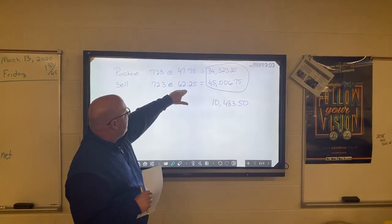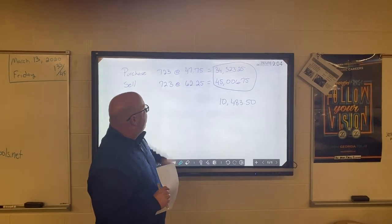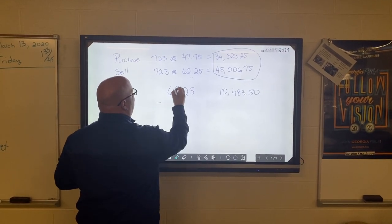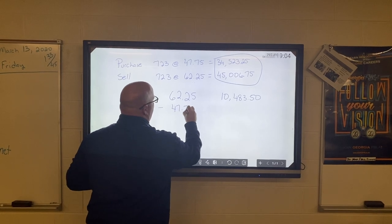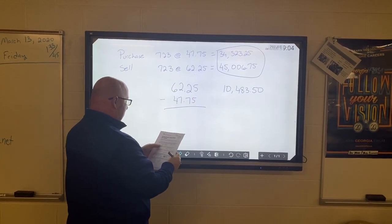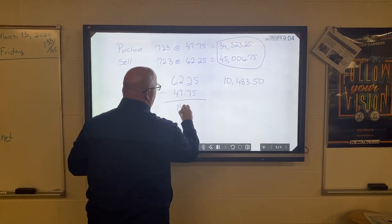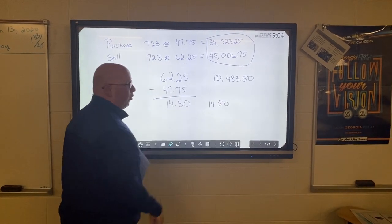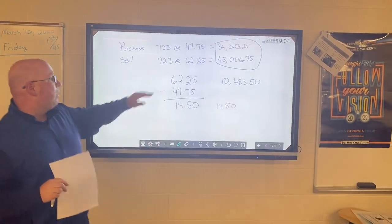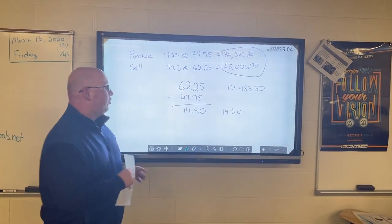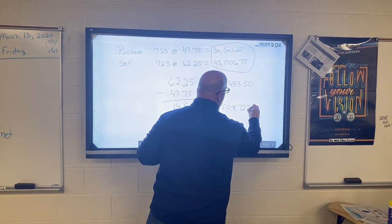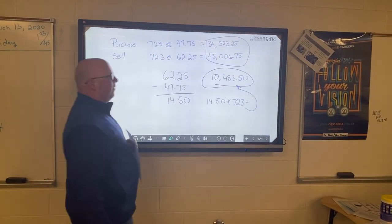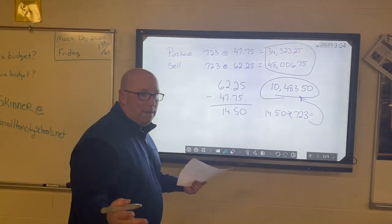We made $10,483.50 off that sale of stock. Now with that being said, a quicker way to do this problem would be: we know that we got $62.25 and we bought it for $47.75, so if we did $62.25 minus $47.75, the difference of those numbers is going to be $14.50. We take $14.50, that's what we made per share.